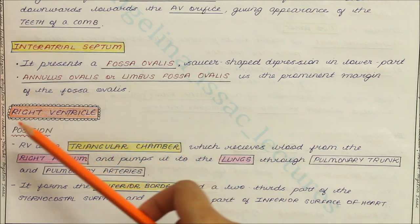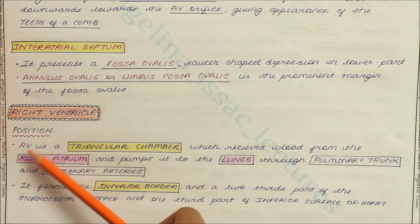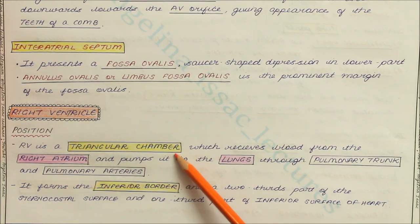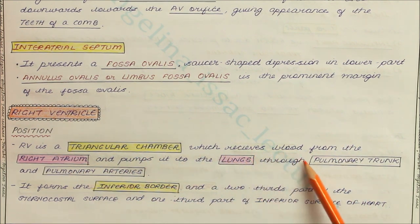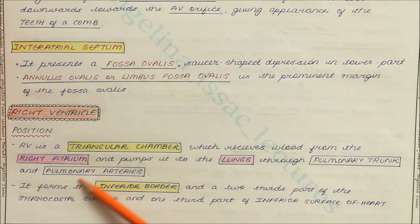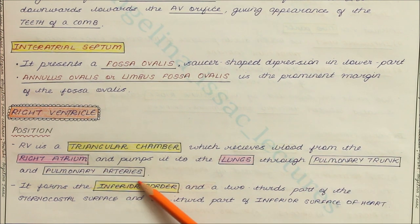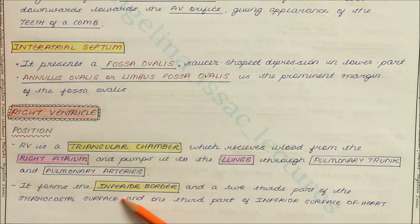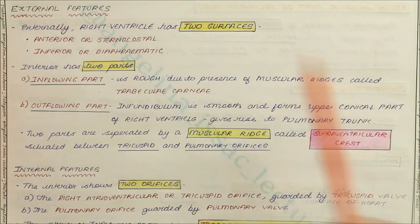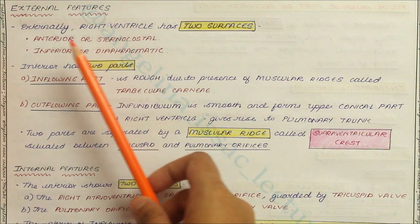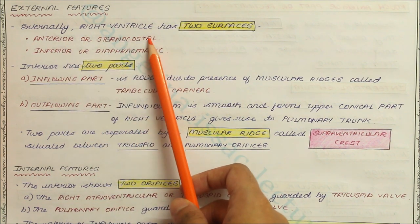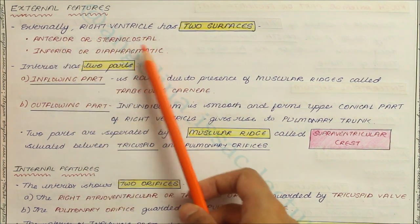To summarize the key points: the right ventricle is a triangular chamber which receives blood from the right atrium and pumps it to the lungs through the pulmonary trunk and pulmonary arteries. It forms the inferior border, a two-thirds part of the sternocostal surface, and one-third part of the inferior surface of the heart. Externally, the right ventricle has two surfaces: the anterior or sternocostal surface, and the inferior or diaphragmatic surface.